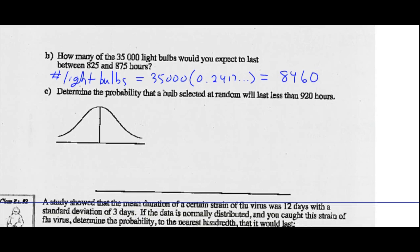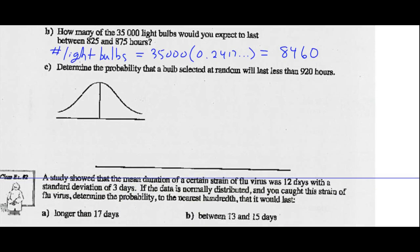Part C: Determine the probability that a bulb selected at random will last less than 920 hours. So again, the mean was 900, the standard deviation was 50. We want to know what the probability is that it will last less than 920 hours. So again, normal CDF.